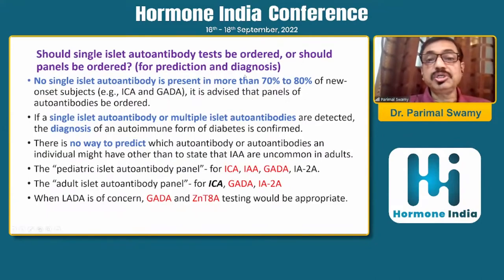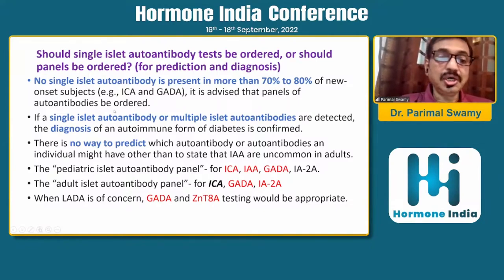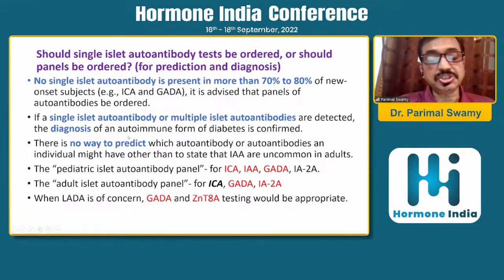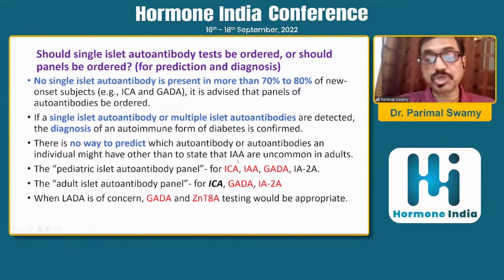Should a single islet autoantibody test or a panel be ordered? No single islet autoantibody is present in more than 70–80% of new-onset patients, so a panel is advised. A single or multiple islet autoantibody, if detected, is sufficient for diagnosis but probably not for prediction. For prediction in pre-clinical, presymptomatic stages (stage 1 or 2), at least two autoantibodies are required. IAA antibodies are uncommon in adults but are the first to appear in pre-clinical type 1 diabetes.